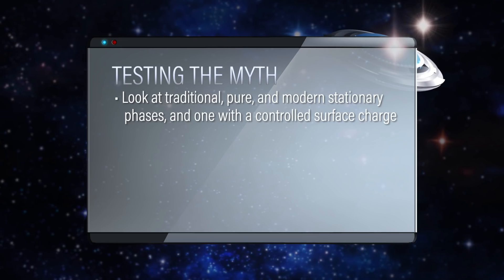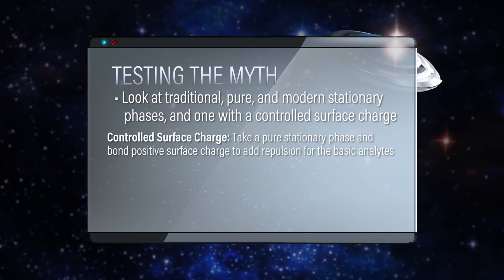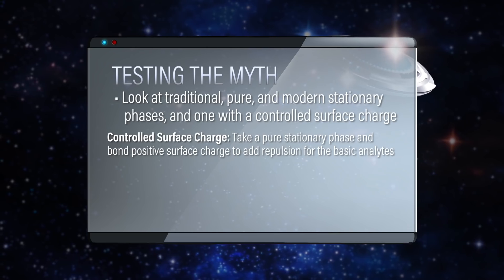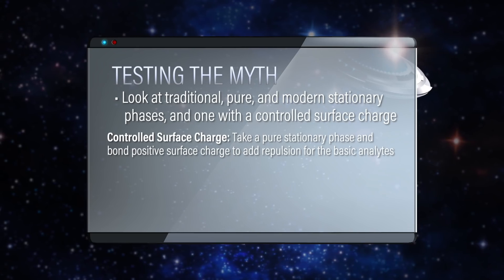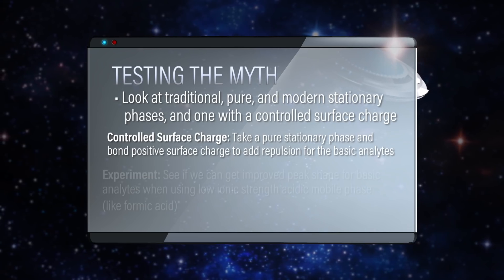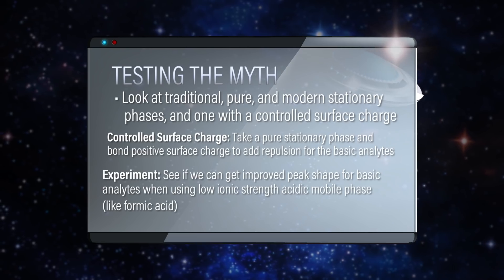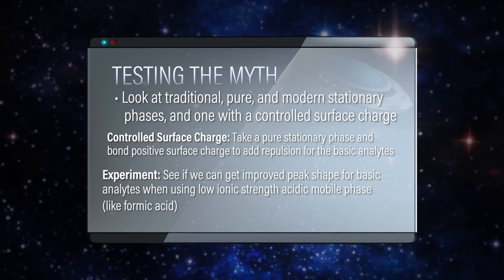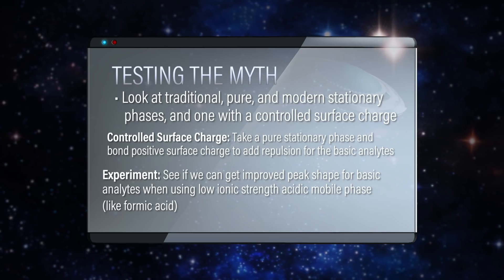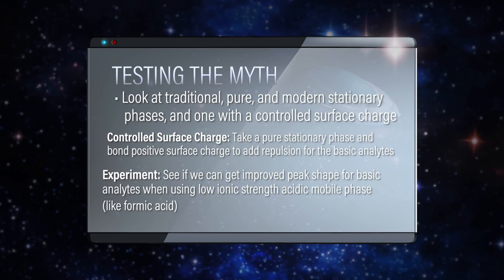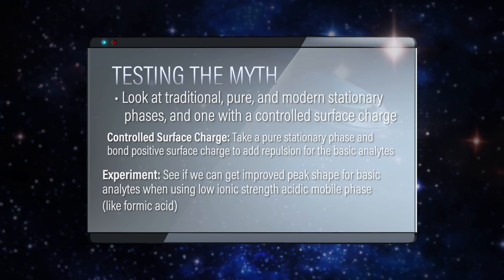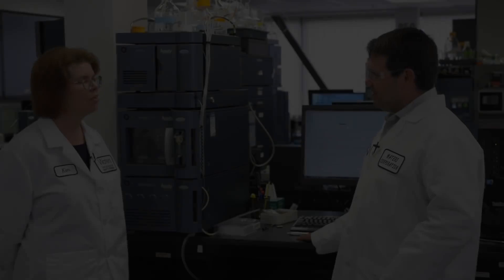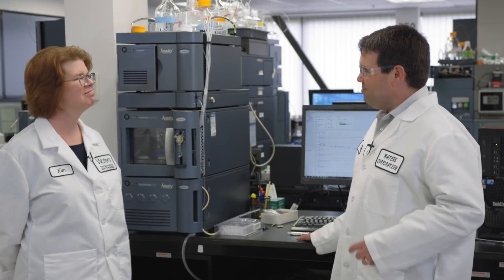What's a controlled surface charge? A controlled surface charge is where you take a pure stationary phase and you actually bond down to the surface a little bit of a positive surface charge, to actually add some repulsion for those basic analytes. We'll see if we can get improved peak shape for those basic analytes when using a low ionic strength acidic mobile phase like formic acid. Okay, let's do it — let's run it.